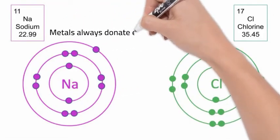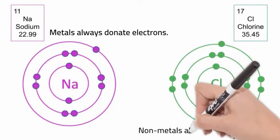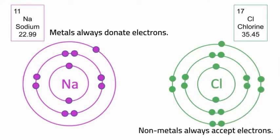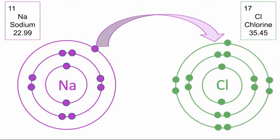Hopefully you answered it would be easiest for chlorine to just accept one electron than for it to try and find seven places for its electrons. So sodium donates an electron to chlorine.